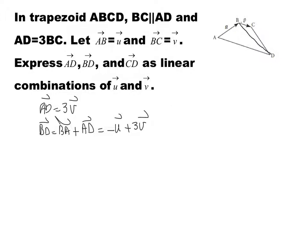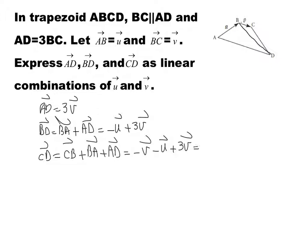Now, the last one is CD. If we want to find CD, we can say that CD is CB plus BA plus AD. But CB is negative v, plus BA is negative u, plus AD. AD we found to be 3v. So, negative v plus 3v is 2v, minus u. These are all linear combinations of vectors u and v.